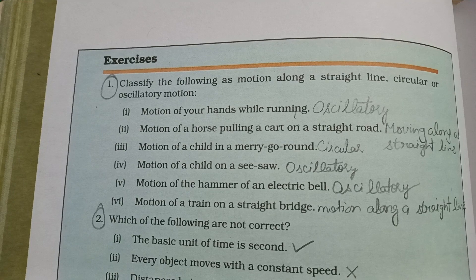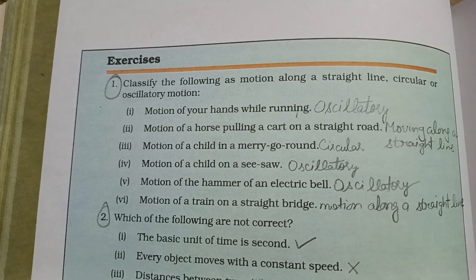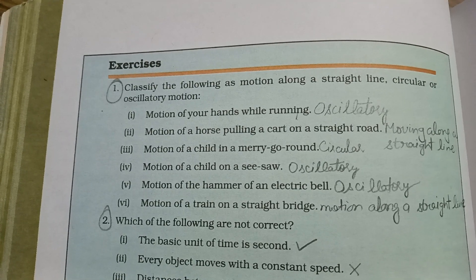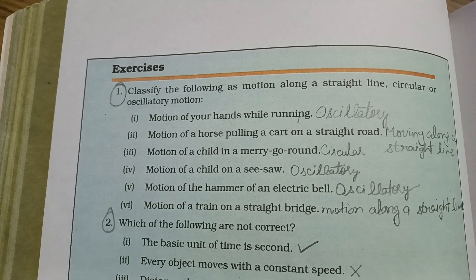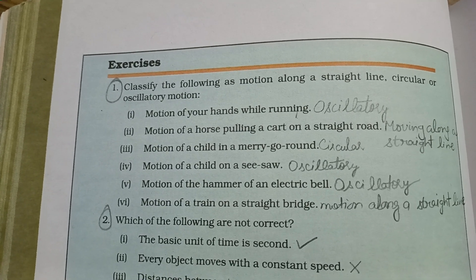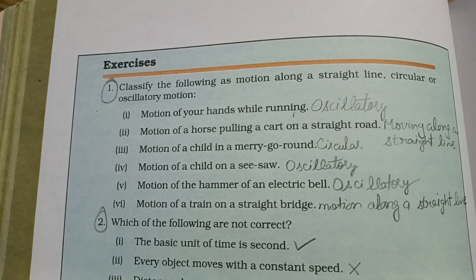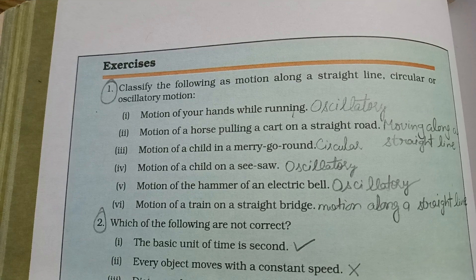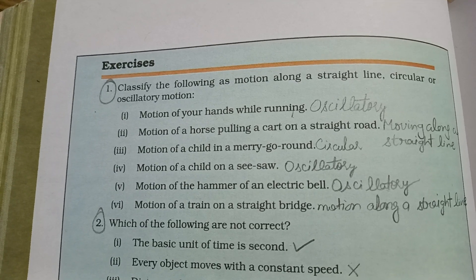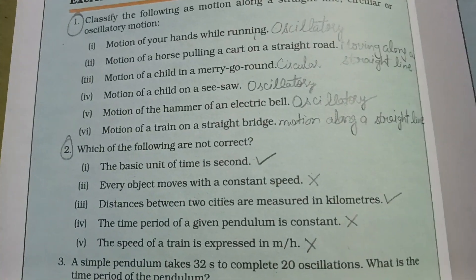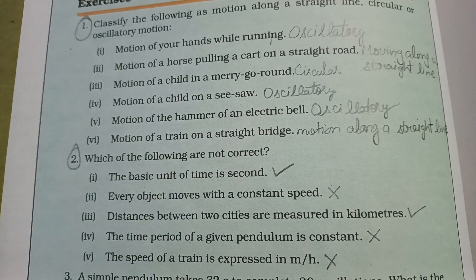Motion of a child on a seesaw - that is also oscillatory, aage piche same type, to and fro motion hai. Motion of a hammer on an electric bell - that is also oscillatory. Motion of train on a straight bridge - that is similar to the horse pulling a cart on a straight road, that is straight line motion.